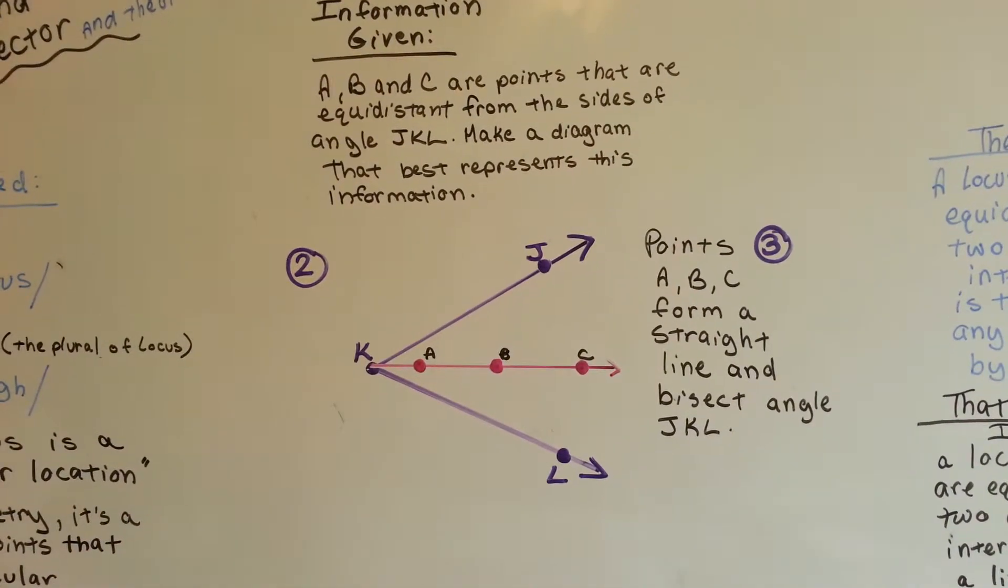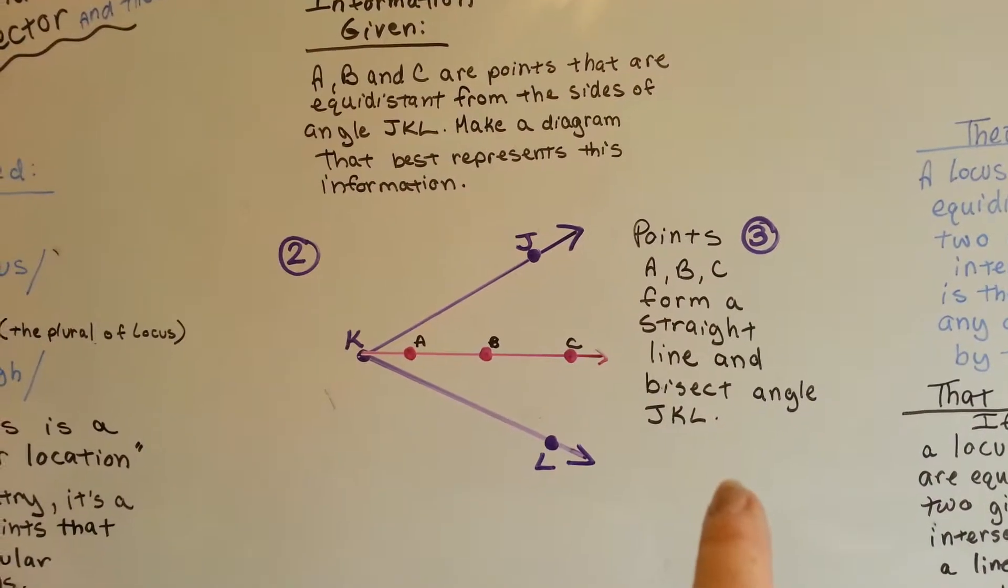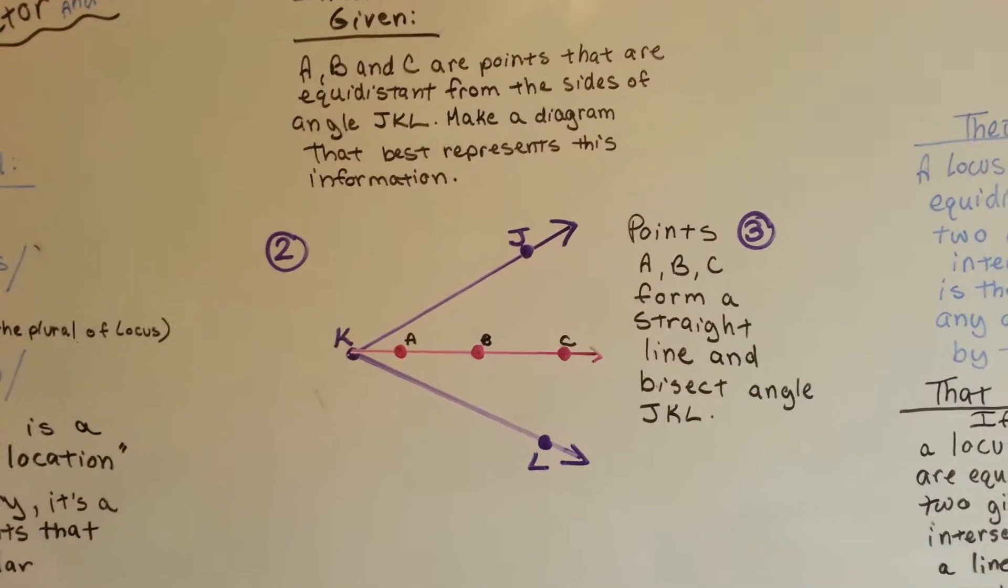So the statement is, points A, B, C form a straight line and bisect angle JKL.